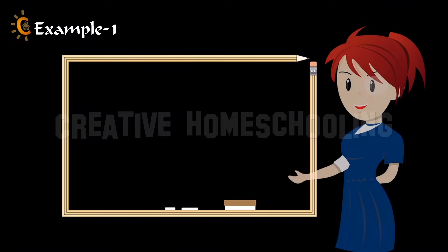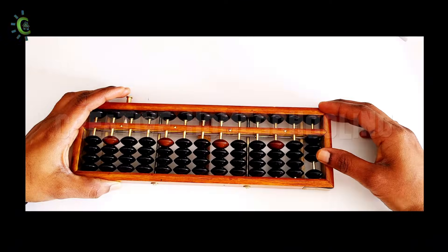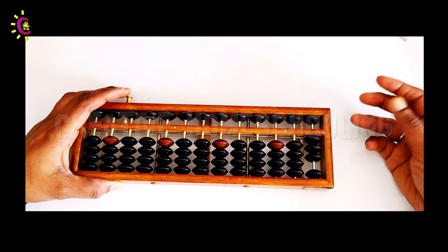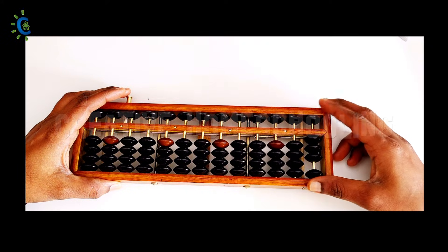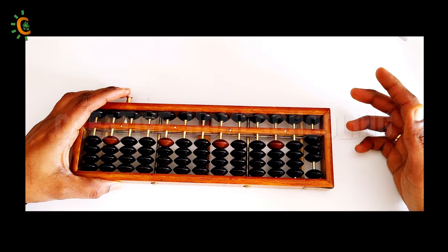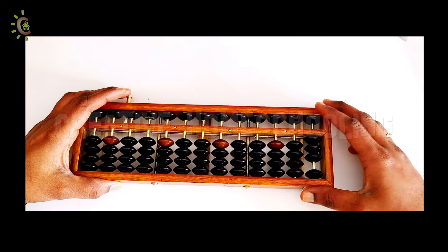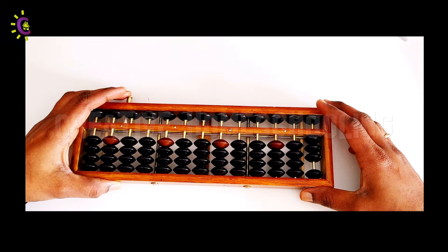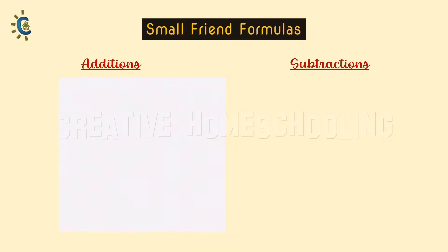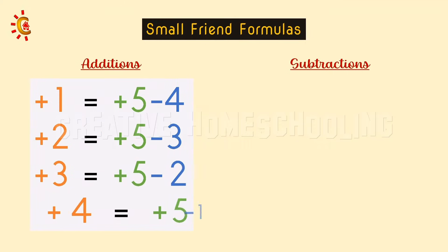let's add 3 plus 2. Place 3 lower bits on the units rod. Now we need to add two more bits, but there are insufficient bits in the column to add on an abacus. So this is where the small friend formula helps us. Let's take a look at it right away.